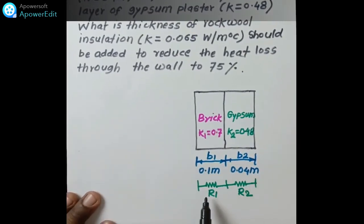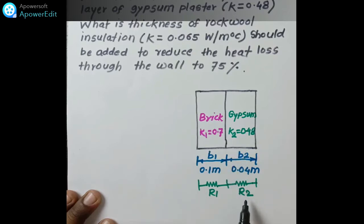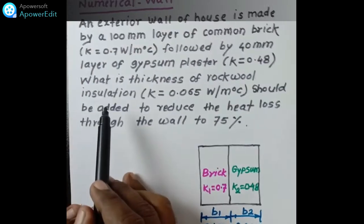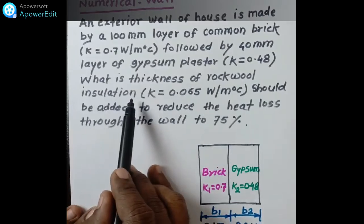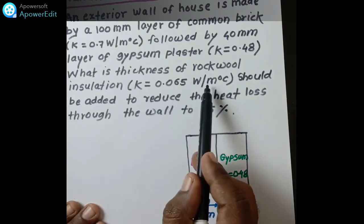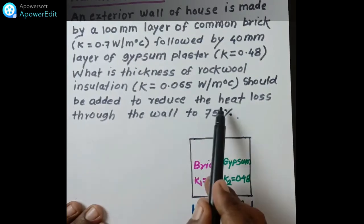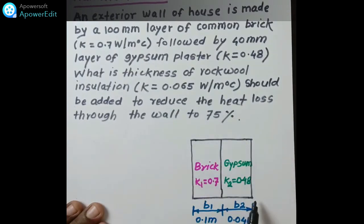Now we are going to use the concept of thermal resistance. The first material has thermal resistance R1 and the second layer has resistance R2. The numerical asks for the thickness of rockwool insulation — the third layer to be added on the right side — with its thermal conductivity given. For 75% heat loss reduction, the thickness of this third layer is to be calculated.